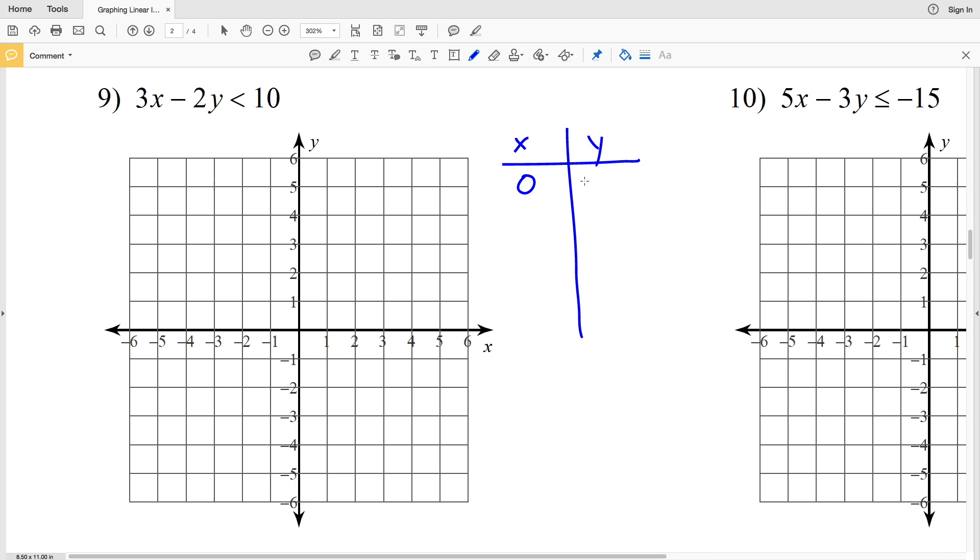Now I'm going to pick 2. What happens when X is 2? 3 times 2 minus 2y equals 10. 3 times 2 is 6, so that'll be 6 minus 2y equals 10. I'm going to subtract 6 from both sides. 10 minus 6 is positive 4. When I divide both sides by negative 2, I get that Y equals negative 2. So when X equals 2, Y is negative 2.